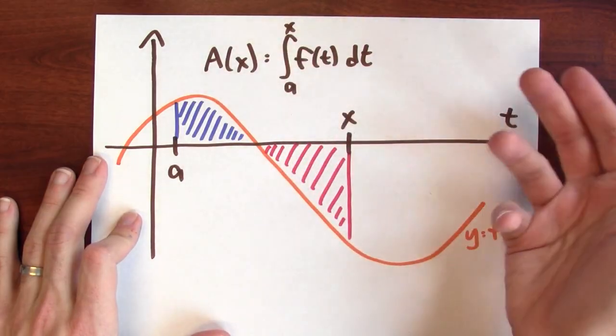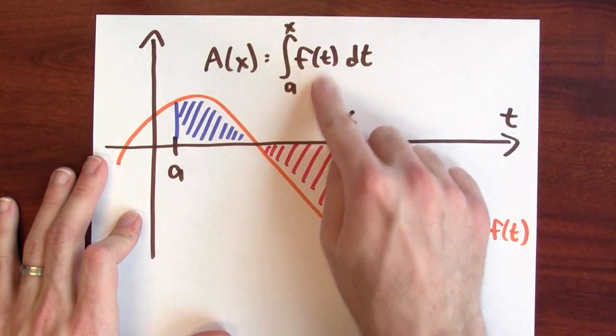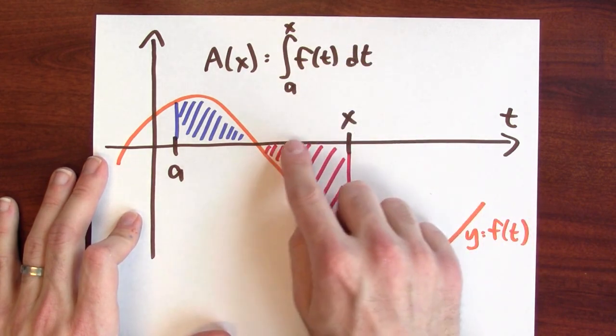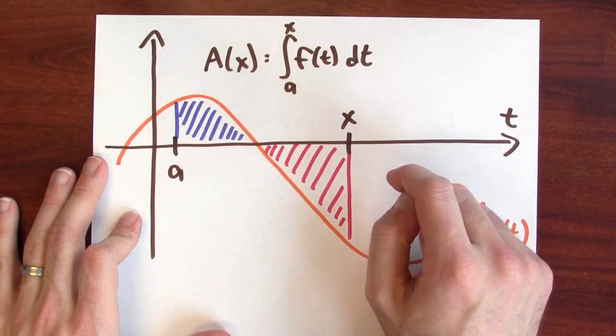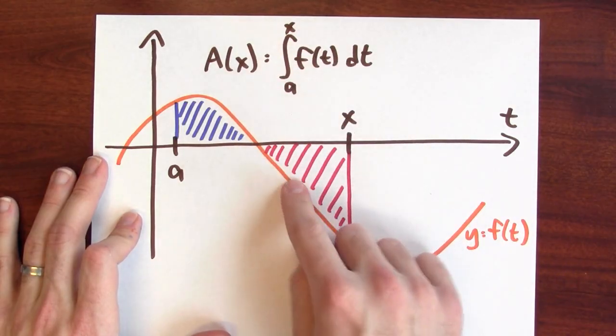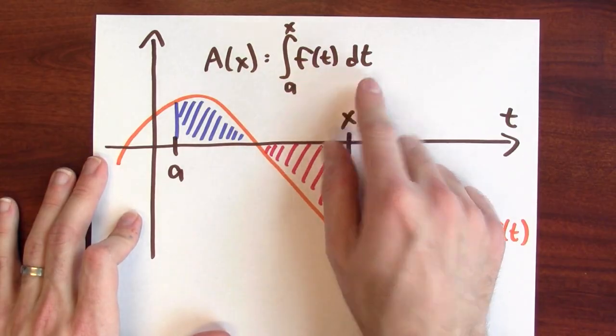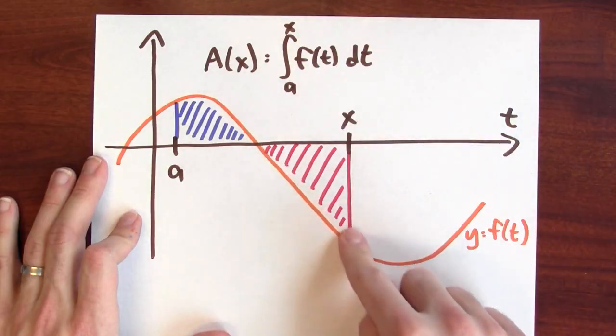The integral is defined as a Riemann sum. It's the function's value evaluated at various sample points times the widths of those tiny rectangles. And if I'm evaluating the function and the function's value's negative, then that's not really an area. That's a signed area and it could be negative.